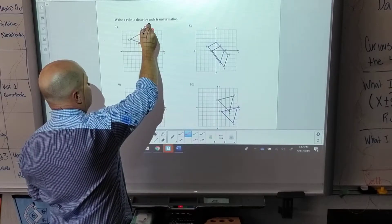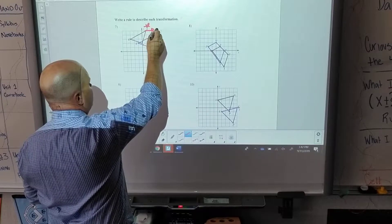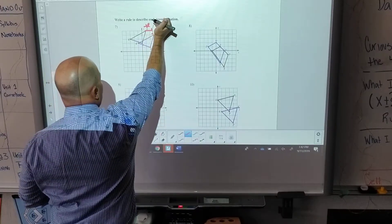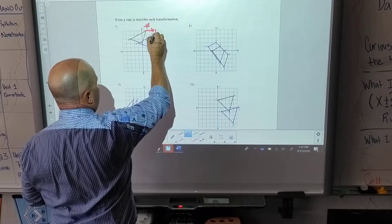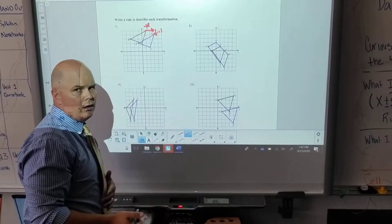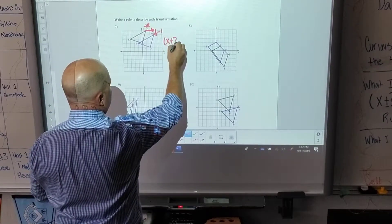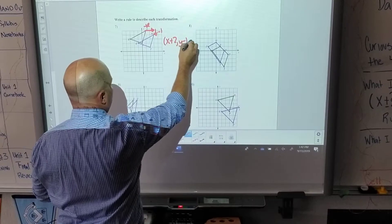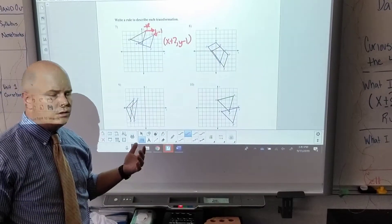Since it's one down, that's going to be a minus one. And when I translate into my rule, it goes like this: x plus two, y minus one. That's my rule. That's what it's looking for. You don't have to find all the coordinates, you just have to identify the rule for each one.